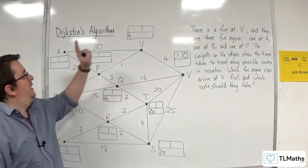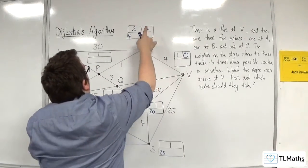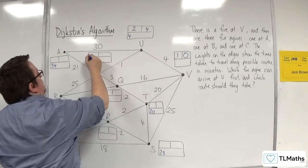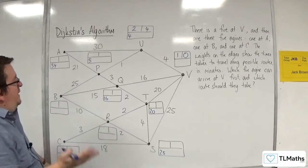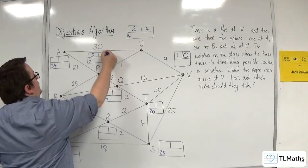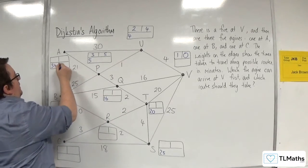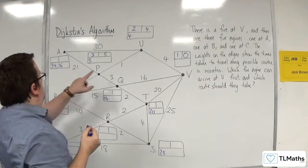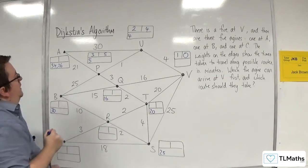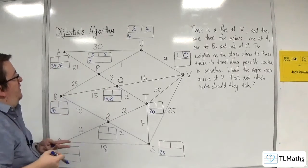So the next shortest is U, so that gets put with a number 2, and the final value is 4. 4 plus 30 is 34, 4 plus 1 is 5. So the next shortest is this one here, so that gets labelled with 3, and the final value 5. 5 plus 21 is 26, which is better than 34. We've got 5 plus 25 is 30. We've got 5 plus 3 is 8, which is better than 16.